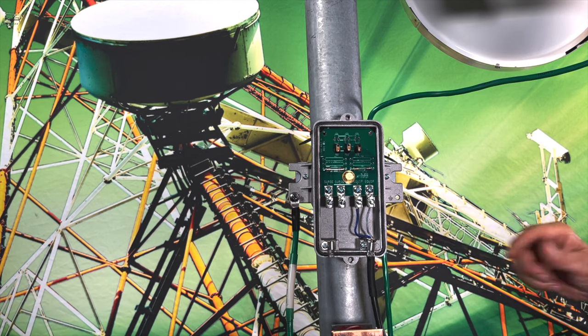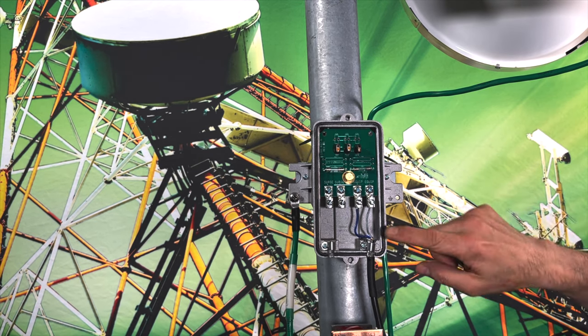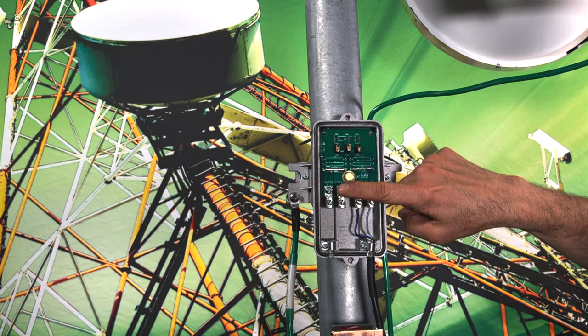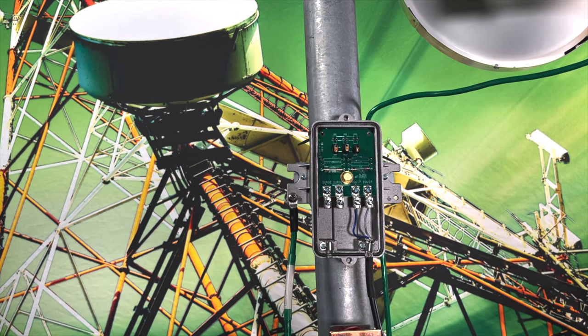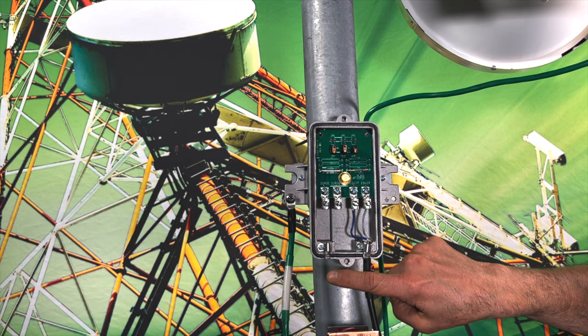That completes our DC power wire that feeds the radio. The next side we're going to do is our DC run that goes down the tower into our equipment shelter to the power supply. We're going to connect this DC line up next.